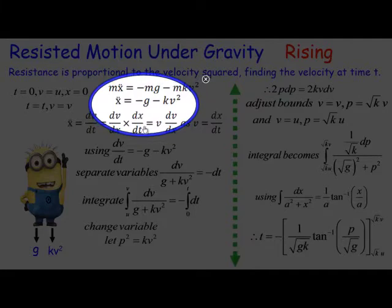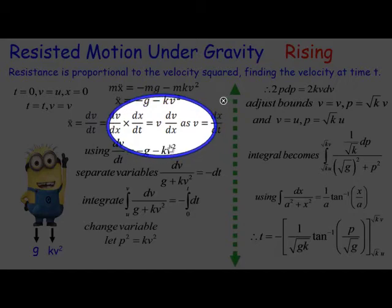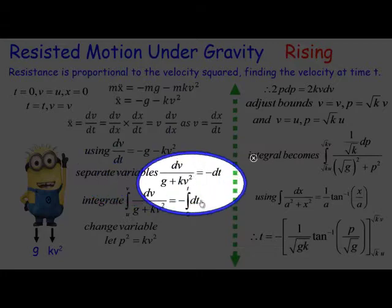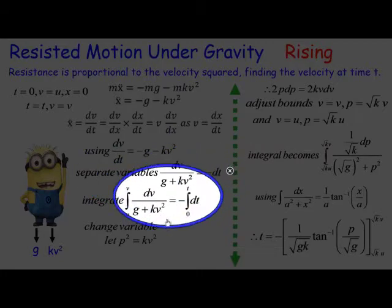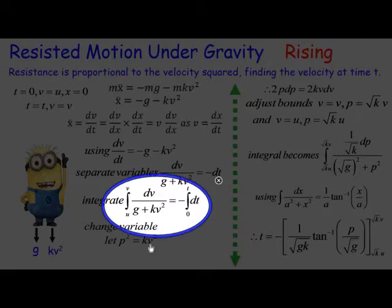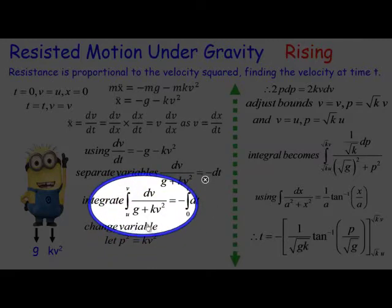X double dot equals minus g minus kv squared. We're going to be using the different ways of writing the acceleration. It's minus g minus kv squared. We separate the variables as we did last time, and then we have to integrate from the initial velocity u up to the velocity v, and time going from 0 to t. We're going to have to try and integrate dv over g plus kv squared.